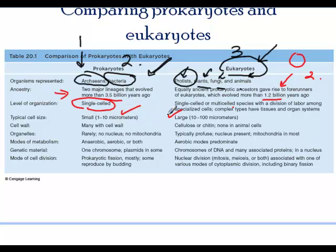Prokaryotes are usually single-celled; eukaryotes can be single or multi-celled and can have a division of labor. Cells are much smaller in prokaryotes and much larger in eukaryotes. Prokaryotes have cell walls, and eukaryotes also have cell walls in some cases — for example, in plants, or chitin and other coatings in fungi — but there are none in animal cells.